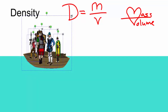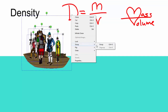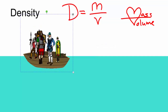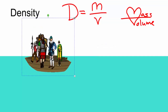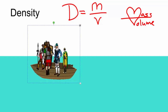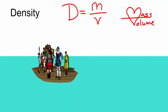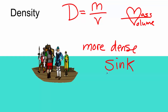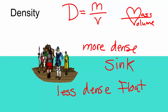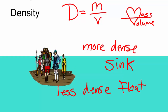What happens when all of these people get together in this boat? It's going to be more densely packed. If I keep packing more and more people in, what happens to that boat? Well, it's going to eventually start to sink. So the more dense objects sink, and less dense things float. If we take all of these people out of the boat, it would come back up. If we put more people in, it would sink all the way down.